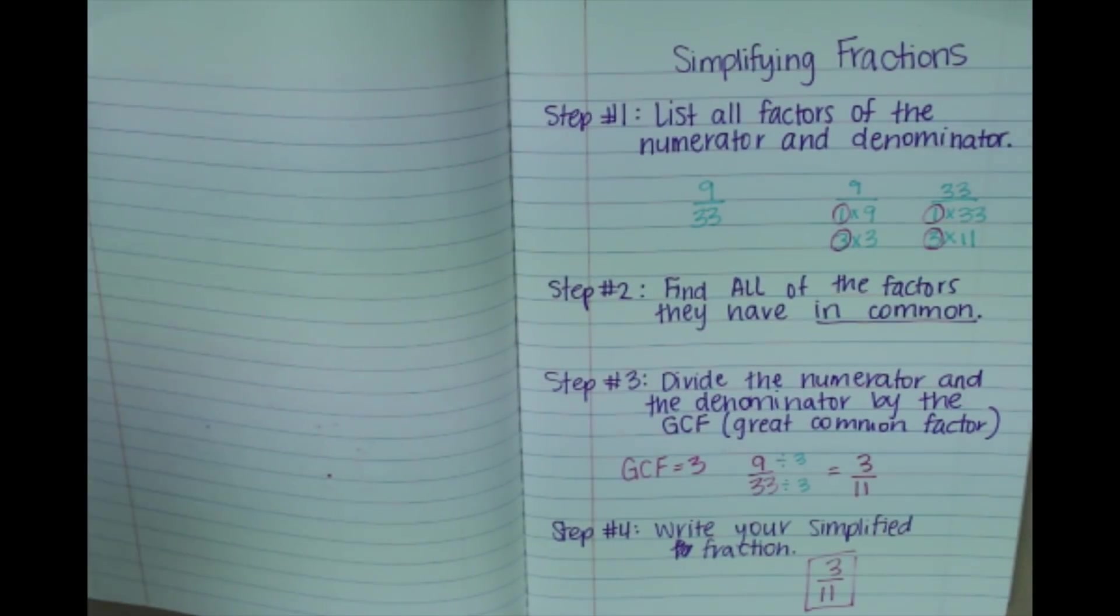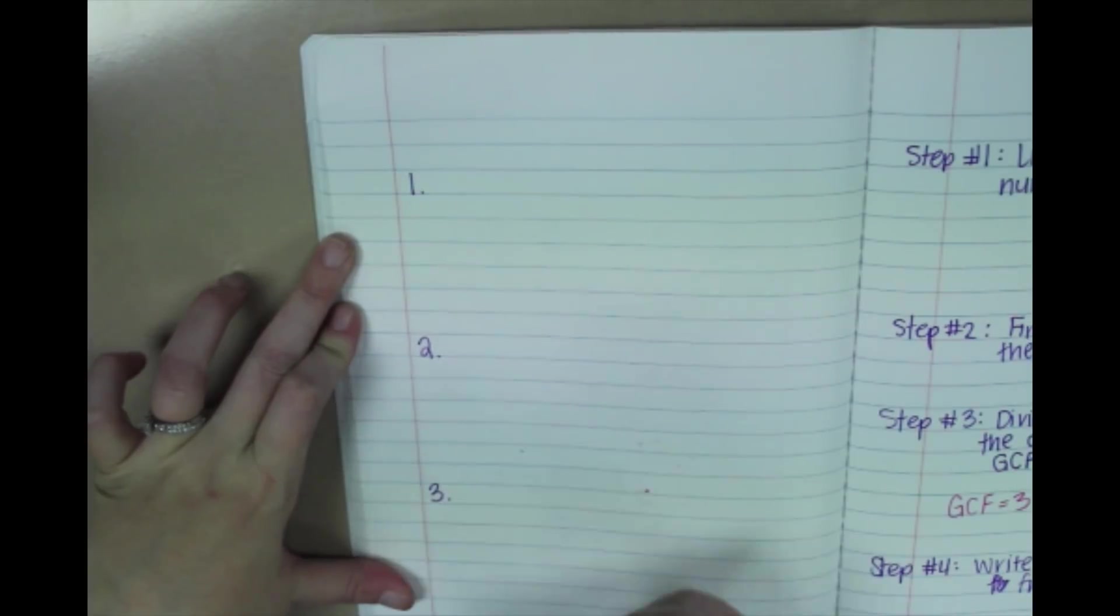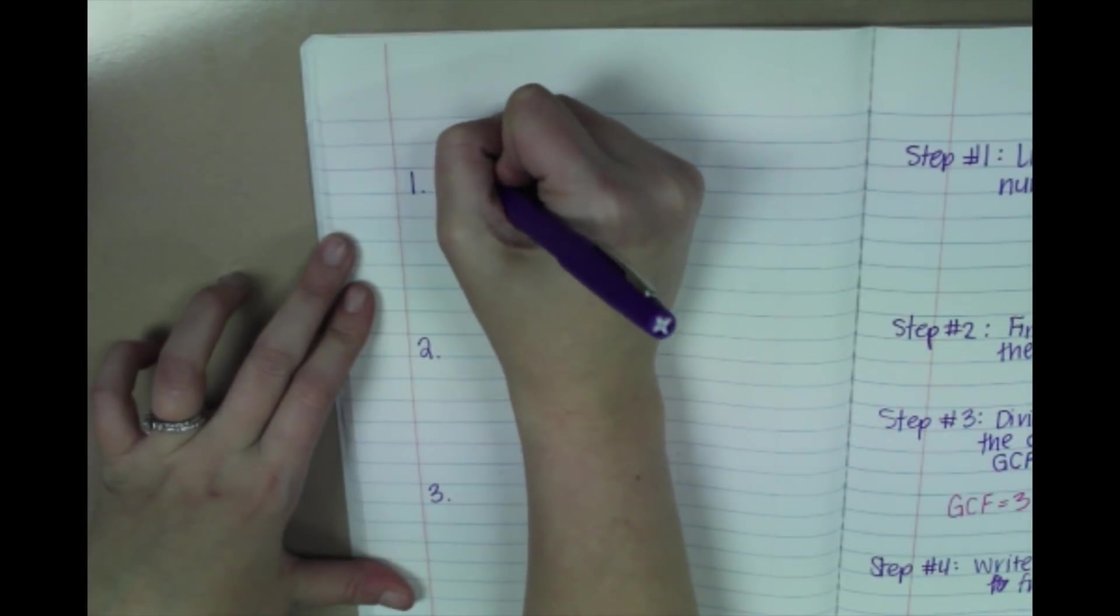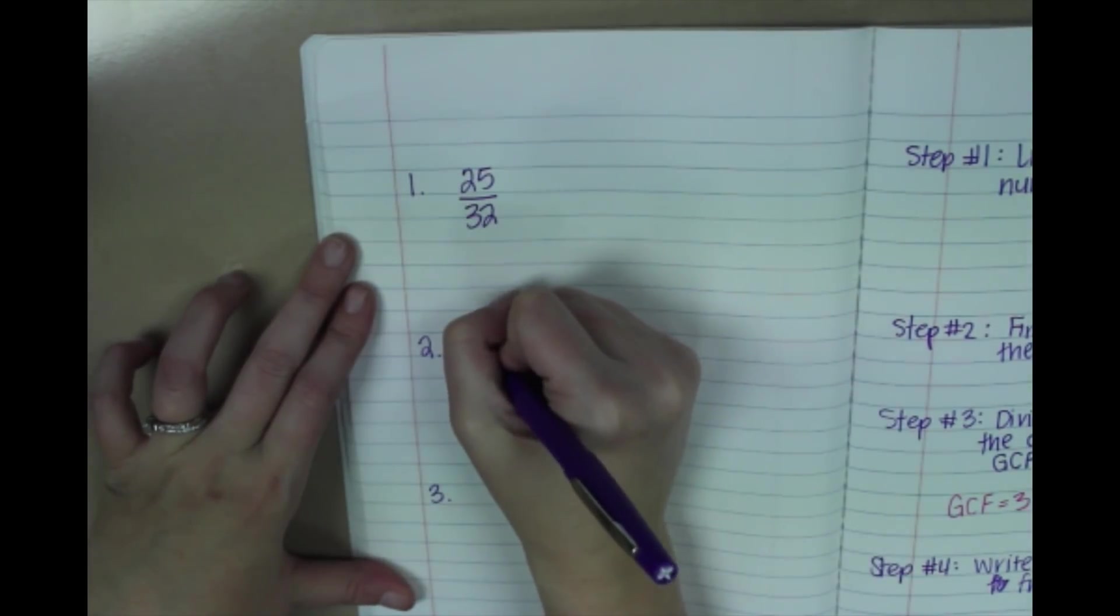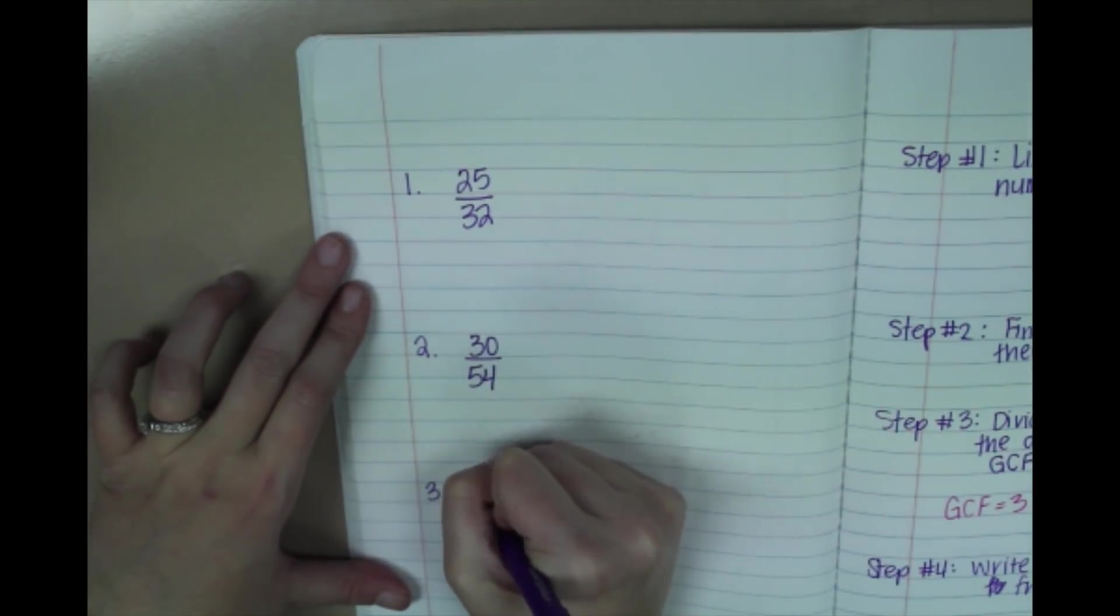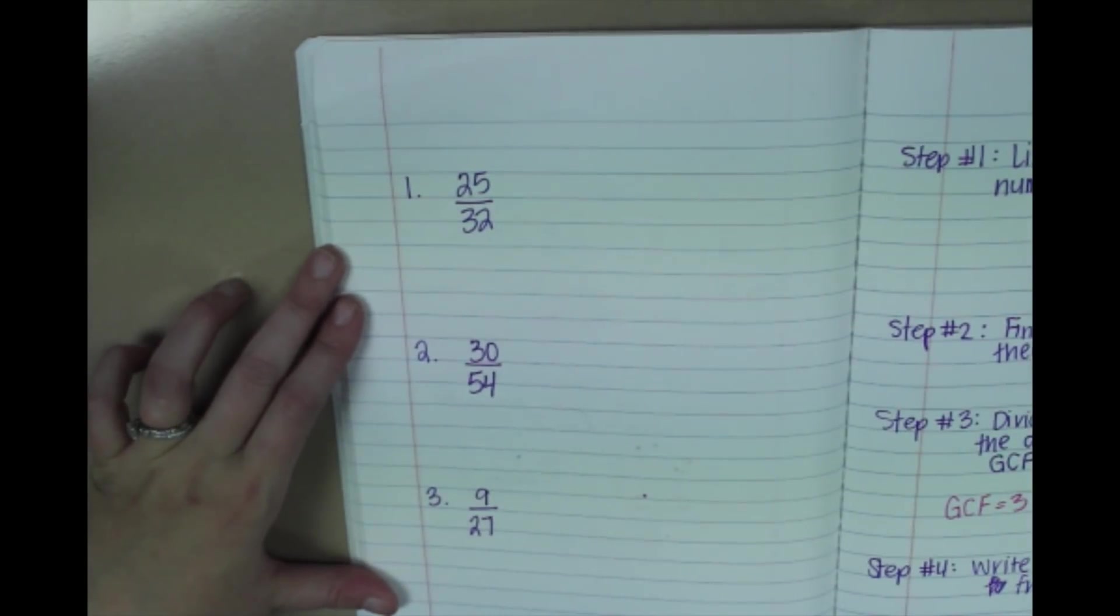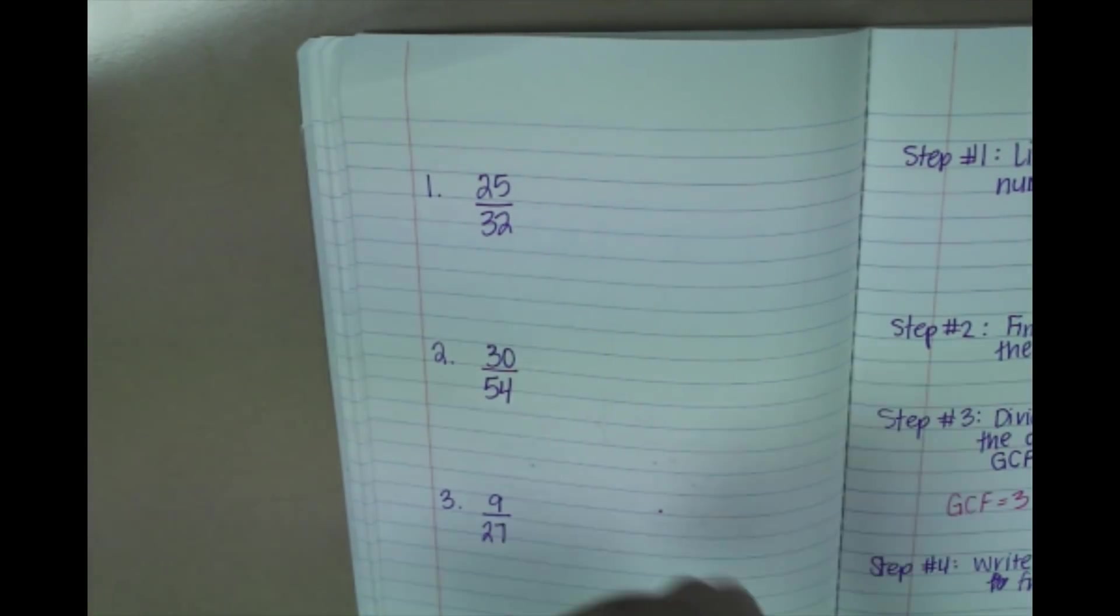So that's how you simplify fractions. On the left-hand side you're going to do a couple of examples on your own to practice, and you will show those to your teacher tomorrow. So we're going to do 3 examples. The first one is 25 over 32, 30 over 54, and 9 over 27. Okay, so follow the steps on the right-hand side to help you answer these questions. Good luck.